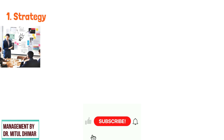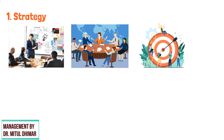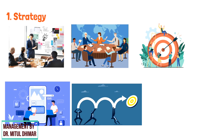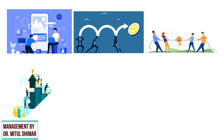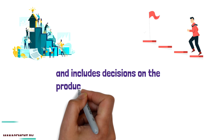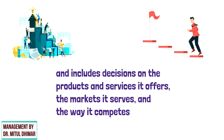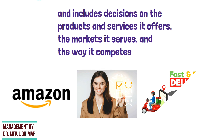Strategy refers to the plan of action that an organization takes to achieve its goals and objectives. It involves the development of a unique approach to reach the desired outcome and to compete effectively in the market. A strategy defines how an organization will allocate its resources to achieve its goals, and includes decisions on the products and services it offers and the markets it serves.